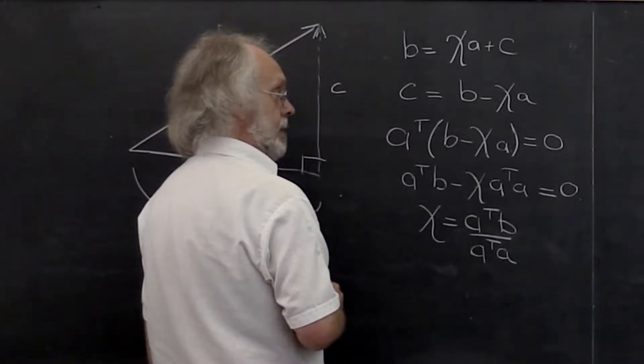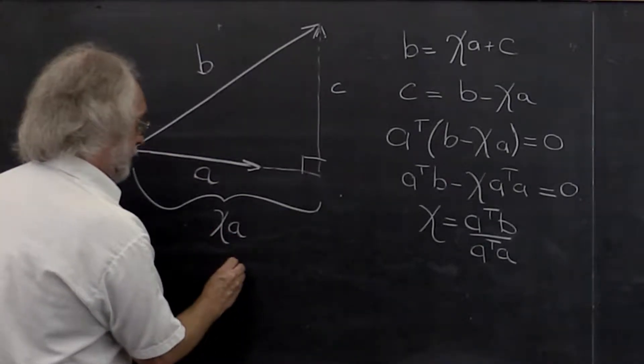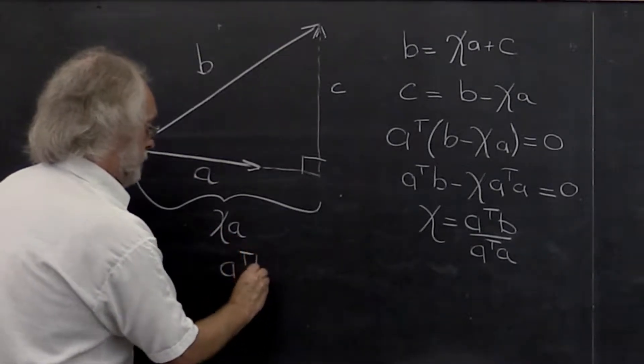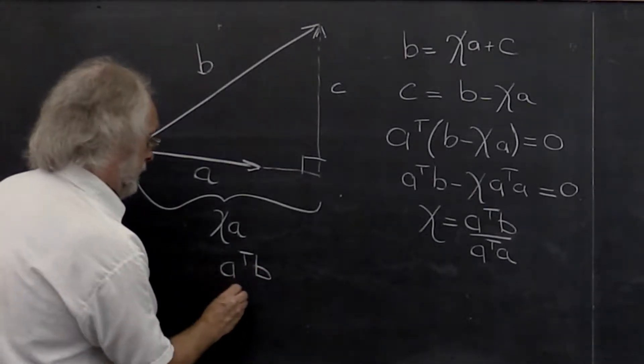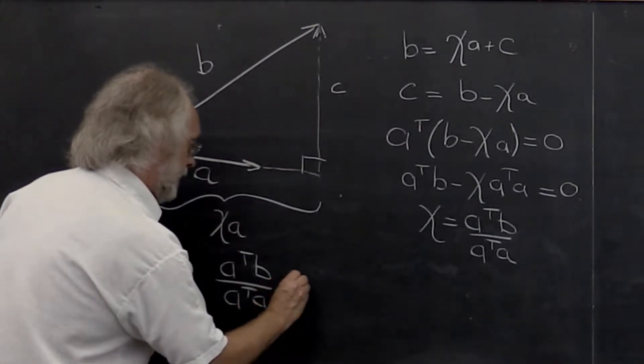Therefore the component in the direction of A is given by A transpose B, A dot product with B, divided by A dot product with itself, times the vector A.